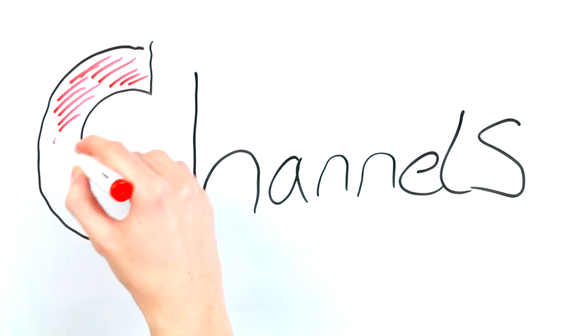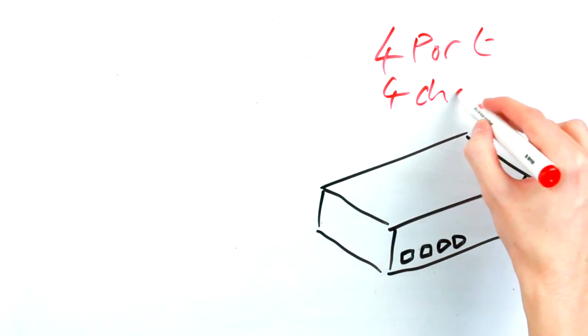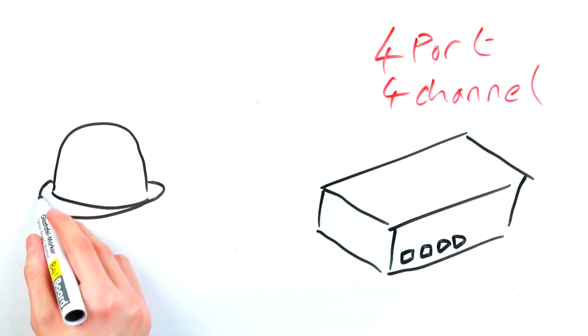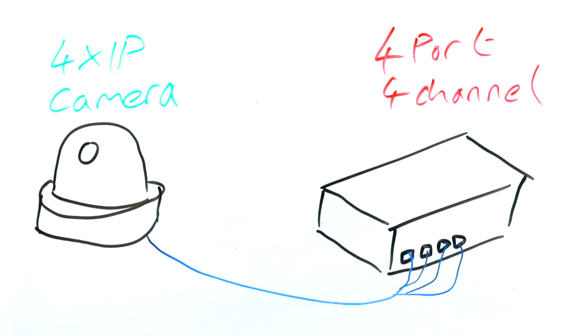Channels. NVRs come with a fixed number of channels. It may be 4, 8, 16, or right up to 128 and beyond. The number of channels an NVR has corresponds to the maximum number of IP devices that NVR can take at one time.